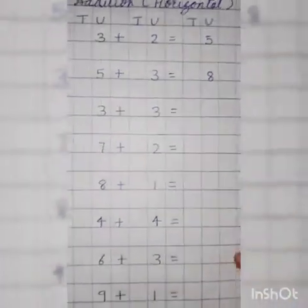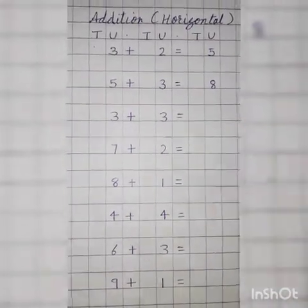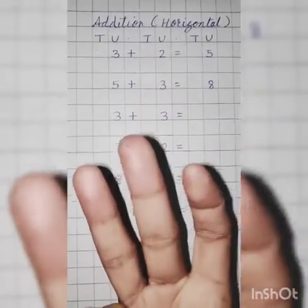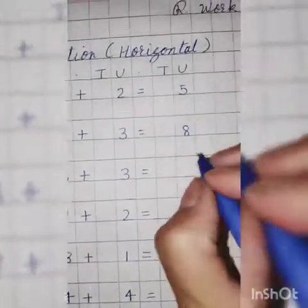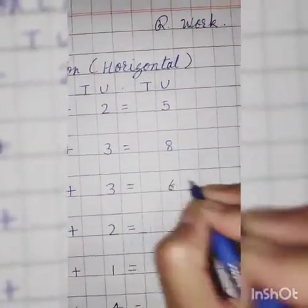3 plus 3. 3 goes on head and 3 on fingers. Hit the 3. After 3, what comes after 3? 4, 5, 6. Write down 6. Answer is 6. Very good.